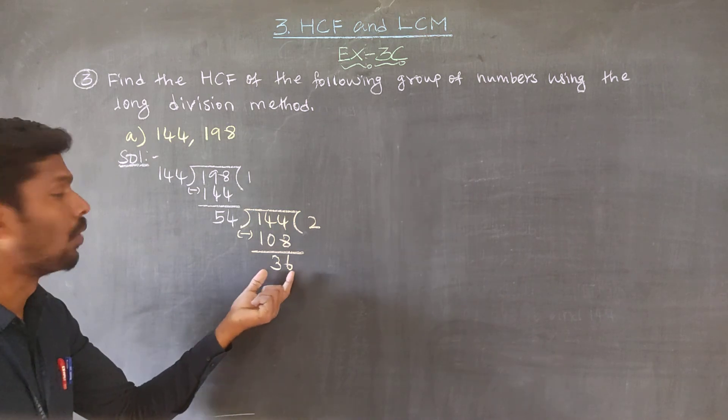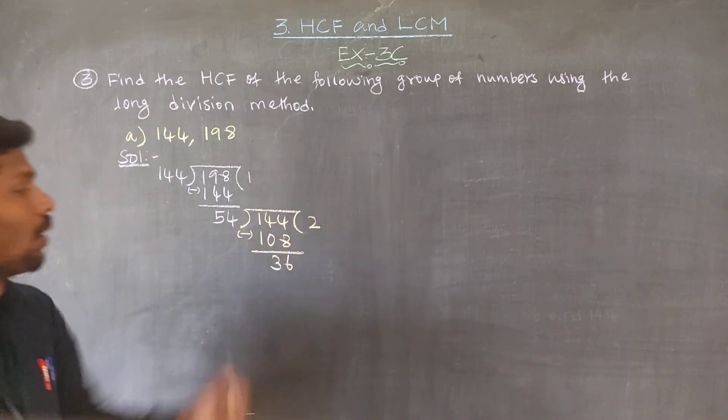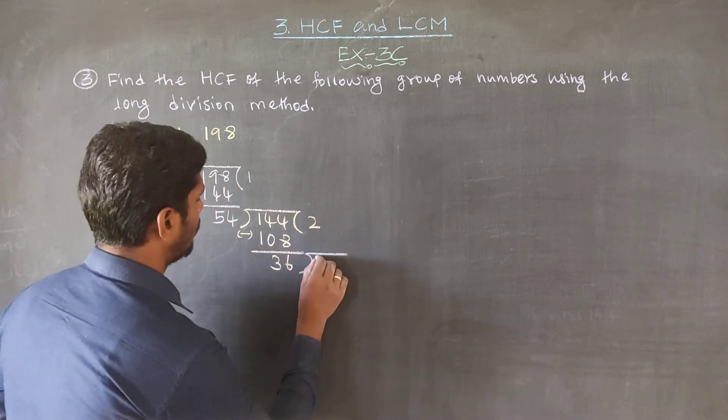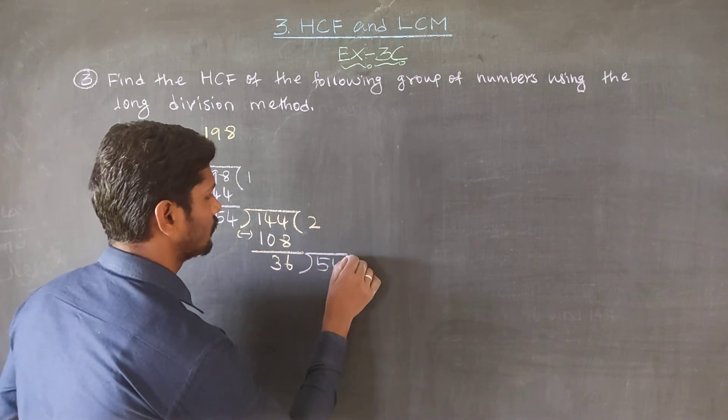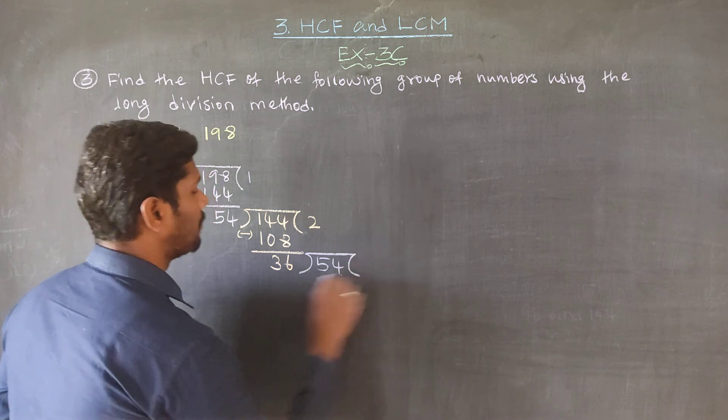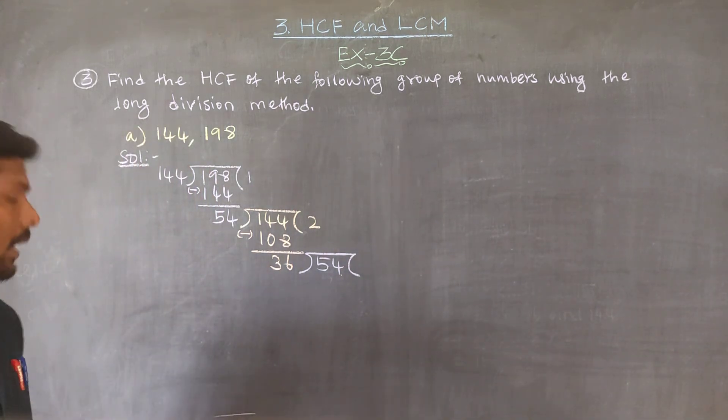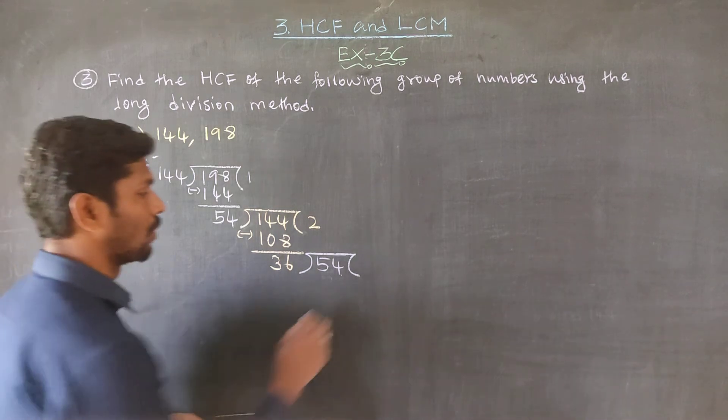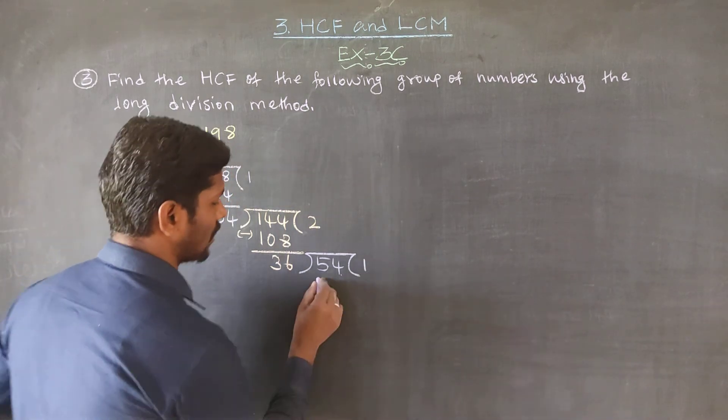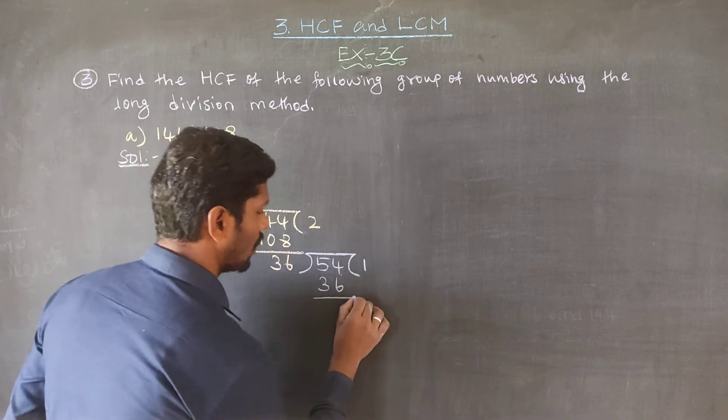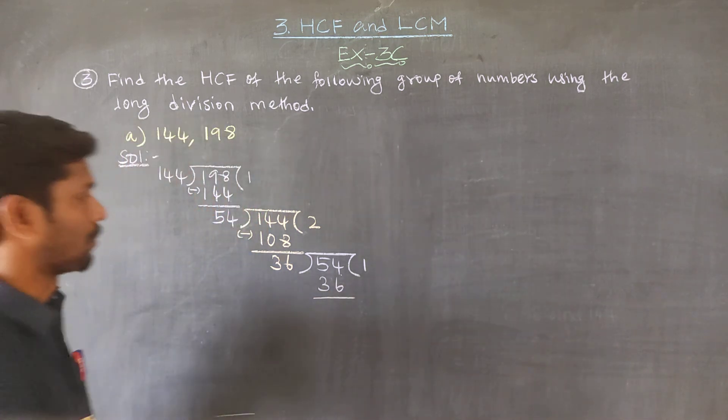54 divided. We have 54. 54 is the dividend, 36 is the divisor.